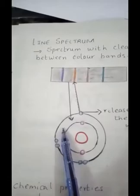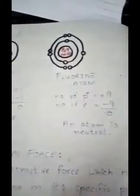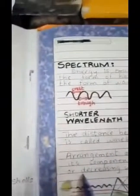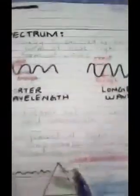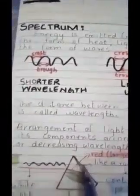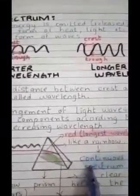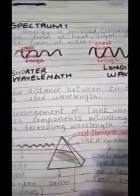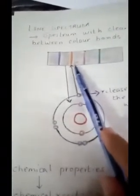And according to Rutherford, electrons continuously revolve around the nucleus. It is in continuous motion. And it should give continuous spectrum. But it was giving this line spectrum. So this was the main defect over here.